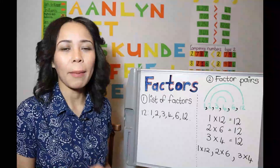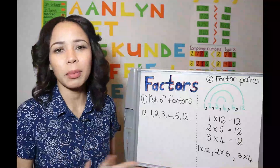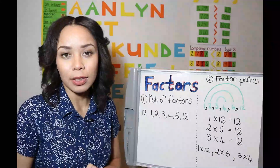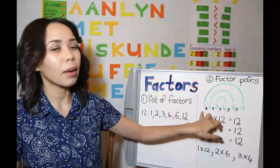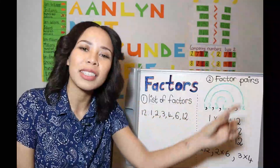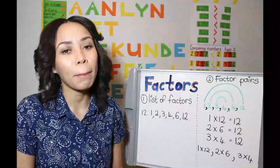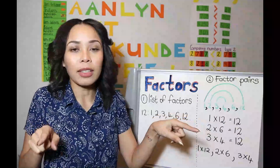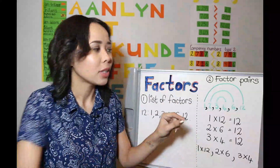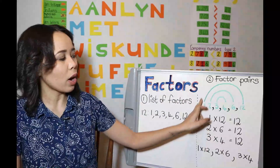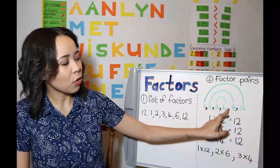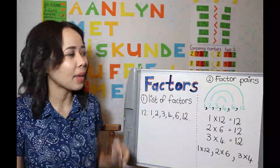A fun thing I do with my kids in class is make them draw little rainbows of the factor pairs — it makes their books look a little bit more colorful and fun. What you do is write down the numbers, and just like the rainbow has one color going from one side all the way to the other side, you do the same with your factor pairs. So 1 and 12, 2 and 6, 3 and 4 — and it creates a factor pair rainbow.